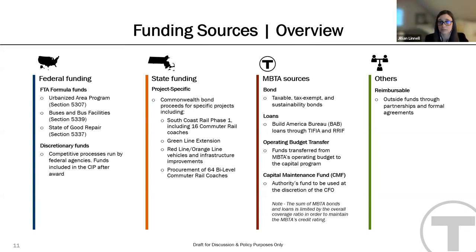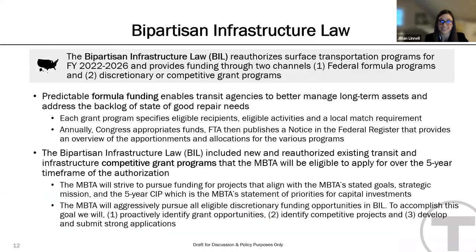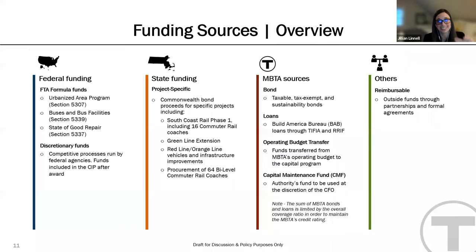These three formula programs provide predictable annual funding levels to support the MBTA's capital program. In addition, the MBTA is eligible and is often awarded competitive funding grants from a range of federal agencies, including USDOT, FTA, and FRA. Once awarded, those funds are reflected as sources in the CIP.